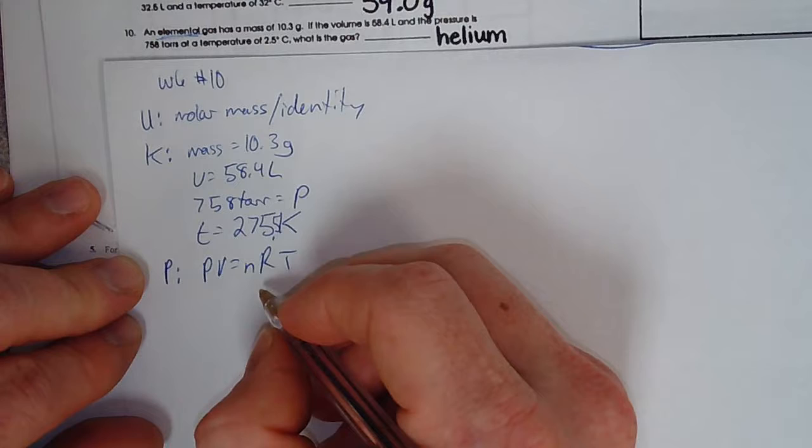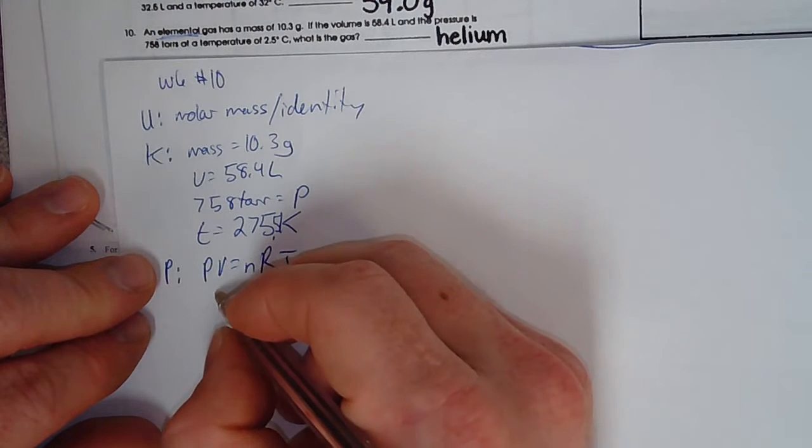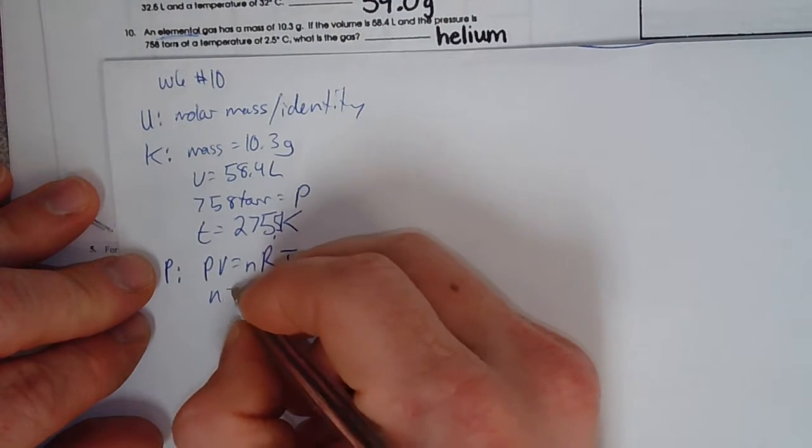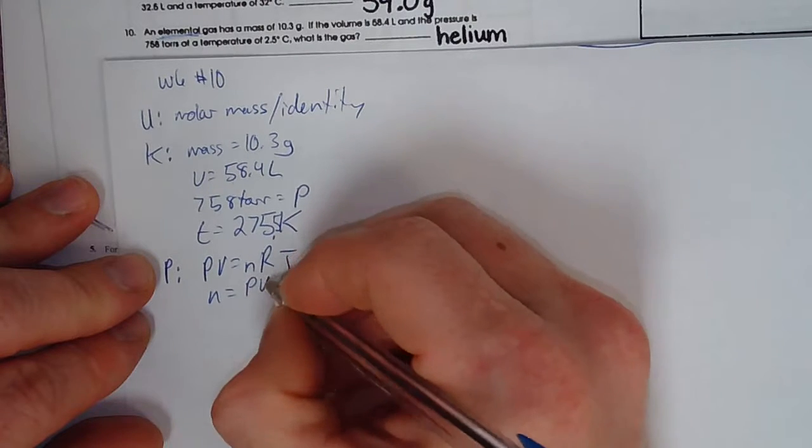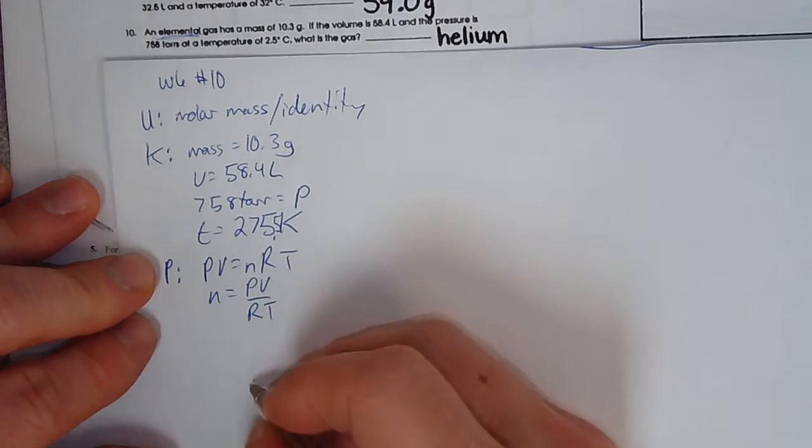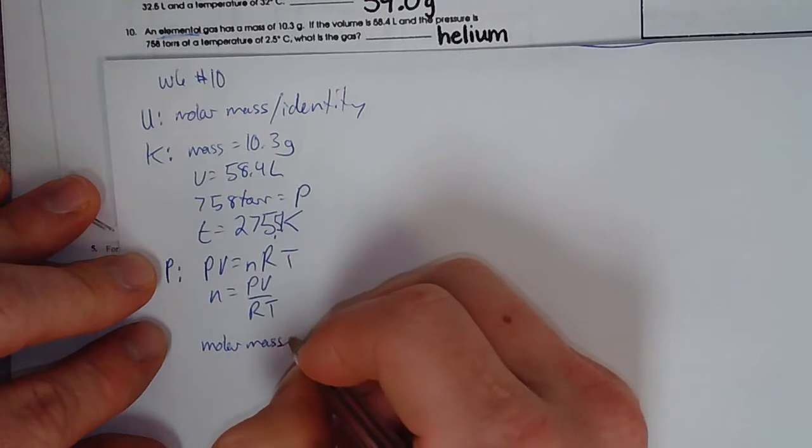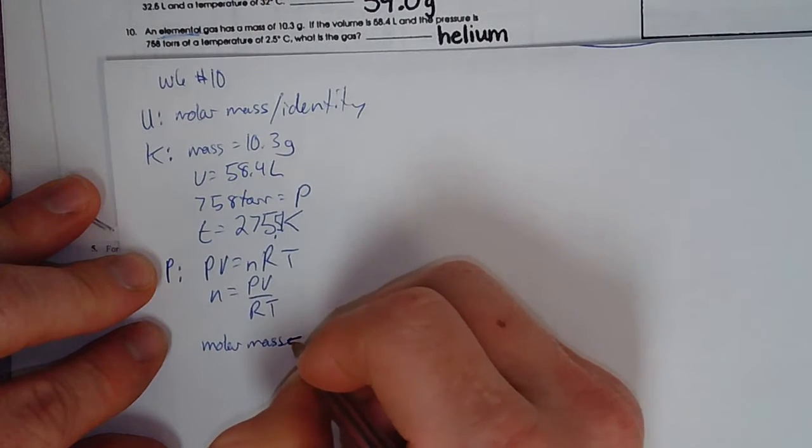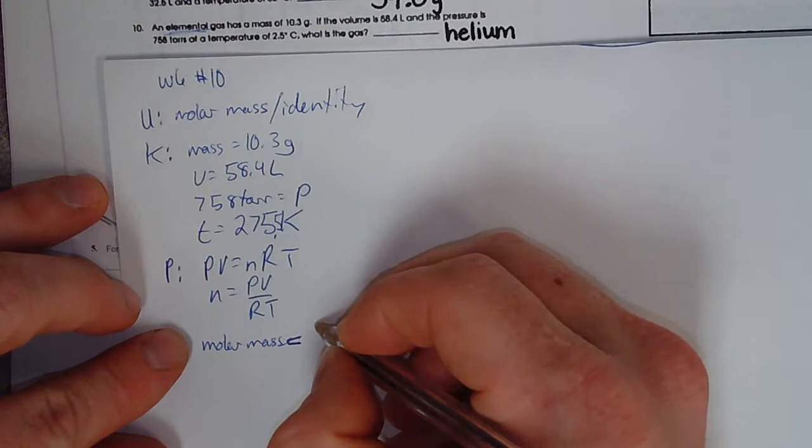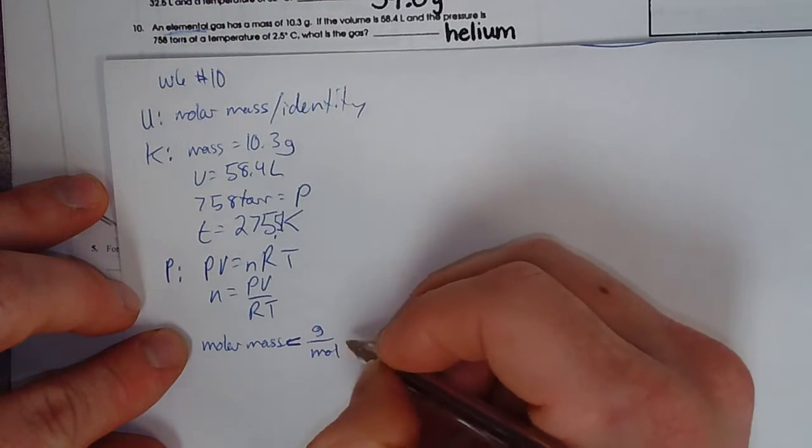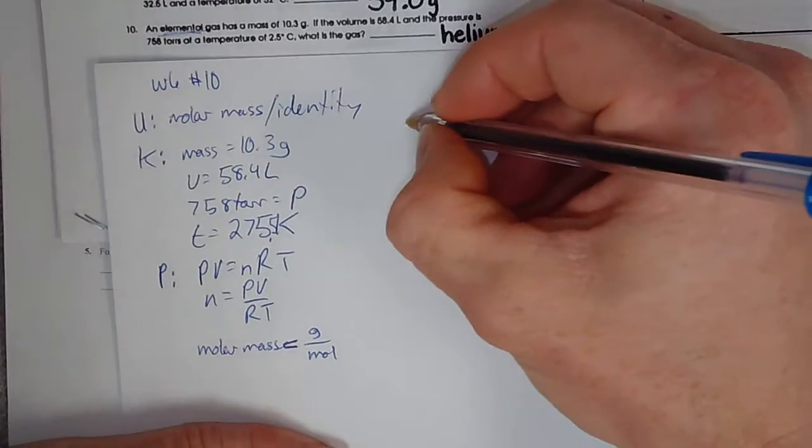So we're going to do PV equals nRT and we're going to get the number of moles. So that's going to be PV divided by RT. And then once we have the number of moles, we're going to do molar mass equals grams over moles. All right, so let's solve.